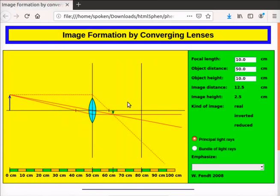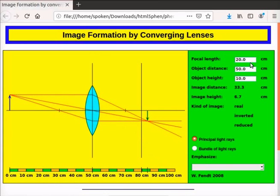2f is twice the distance of the focal length f. From the app, the focal length is 10 cm. So, position of 2f has to be at 20 cm. Green arrow indicates the image formed by the convex lens. In the green control panel, we can edit the values of the following parameters. Change the value of focal length to 20 cm and press enter. At the bottom of the green panel, there are two radio buttons: Principal light rays and bundle of light rays.